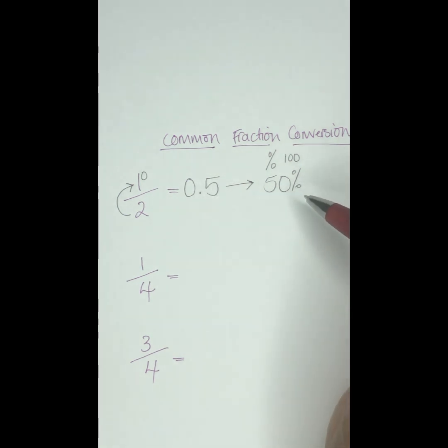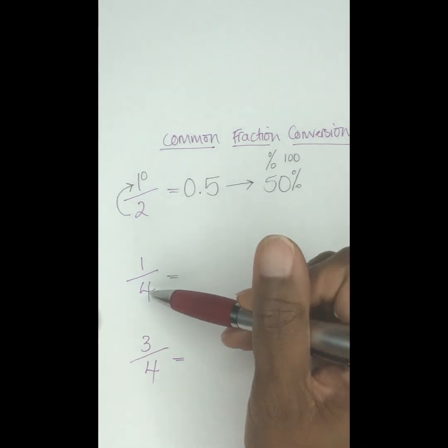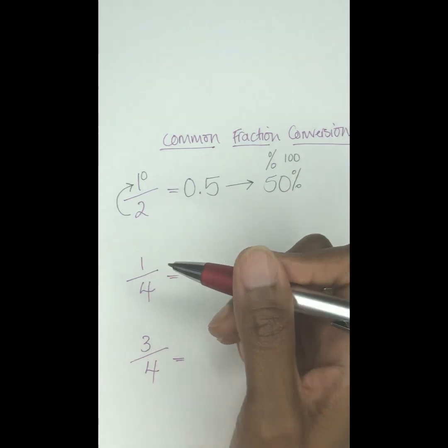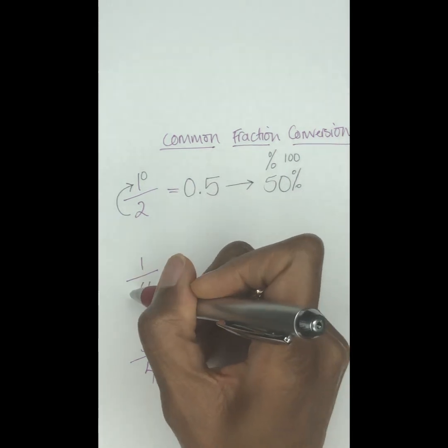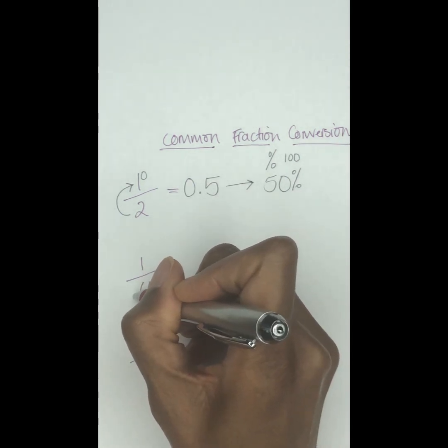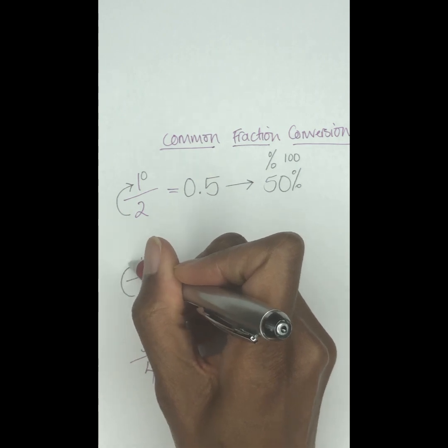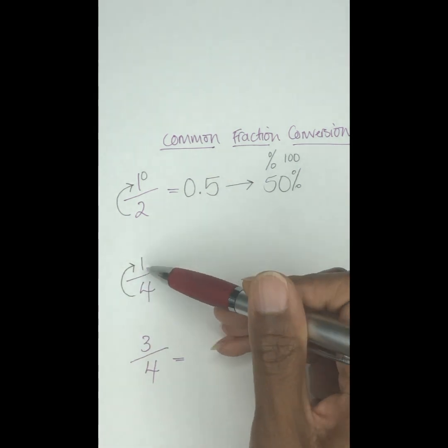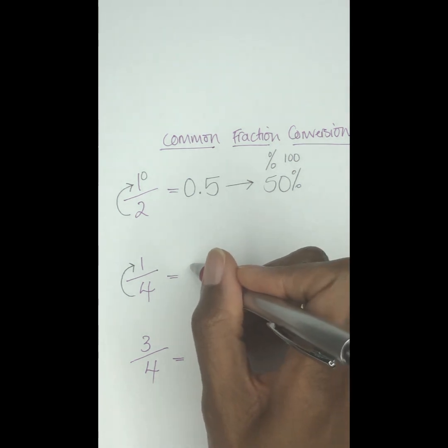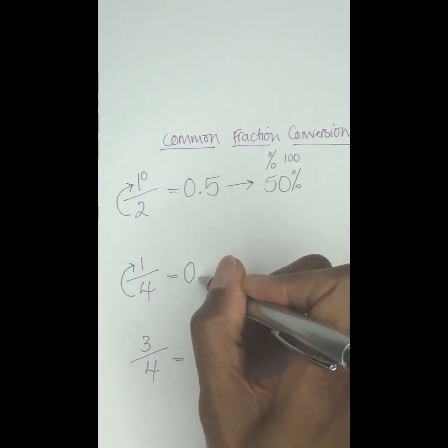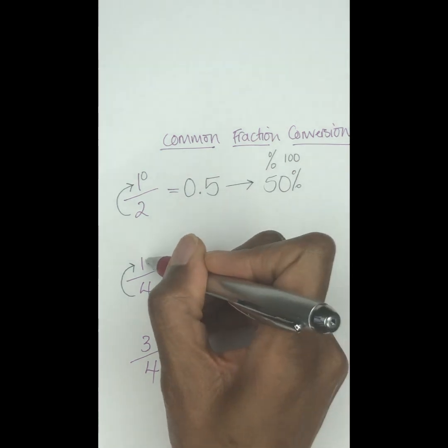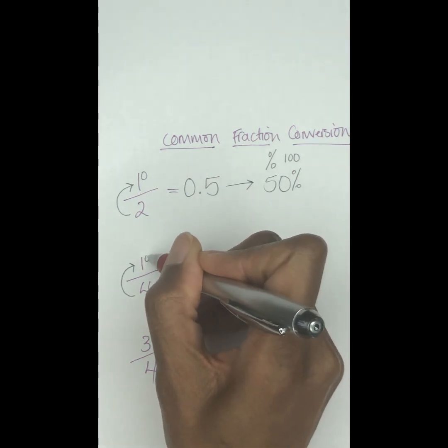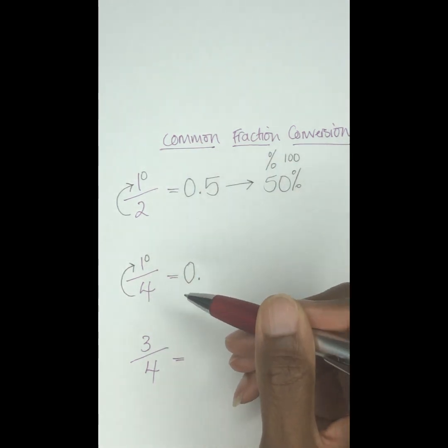Let's take a look at the next one. So we got 1/4. If you think of money as well, you can basically tell me what it is before I even work it out to show you how it gets worked out. But if you put the 4 into the 1, so once again the denominator into the numerator, it can't go, right? So you put a zero, then you put a decimal. Now the 4 can't go into the 1, so like we did up there, we're going to put a zero here.